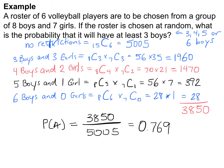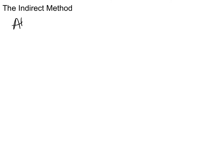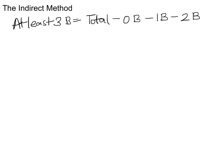Now let's look at the second approach — the indirect method — which I'd like you to try. Remember you'll use subtraction: take the total number of possible outcomes and subtract the cases where there are zero boys, one boy, or two boys. Pause the video, give it a shot, then press play when you're ready.